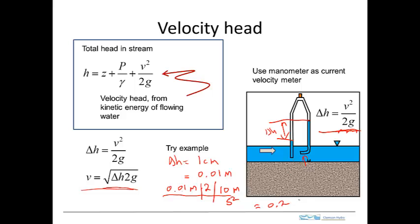Need to take the square root of that, because that's what this formula tells us. The velocity looks like it will be the square root of 0.2, which is 0.44 meters per second. So if I get a velocity head of 1 centimeter, then that corresponds to a velocity of 0.44 meters per second. I can use this simple manometer as a flow meter. This is essentially functioning like a pitot tube flow meter.